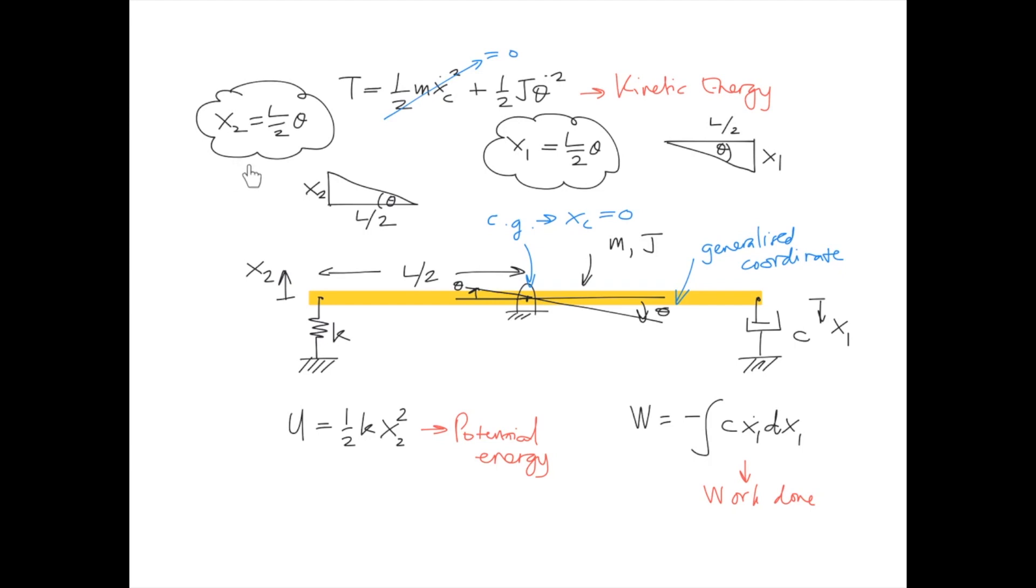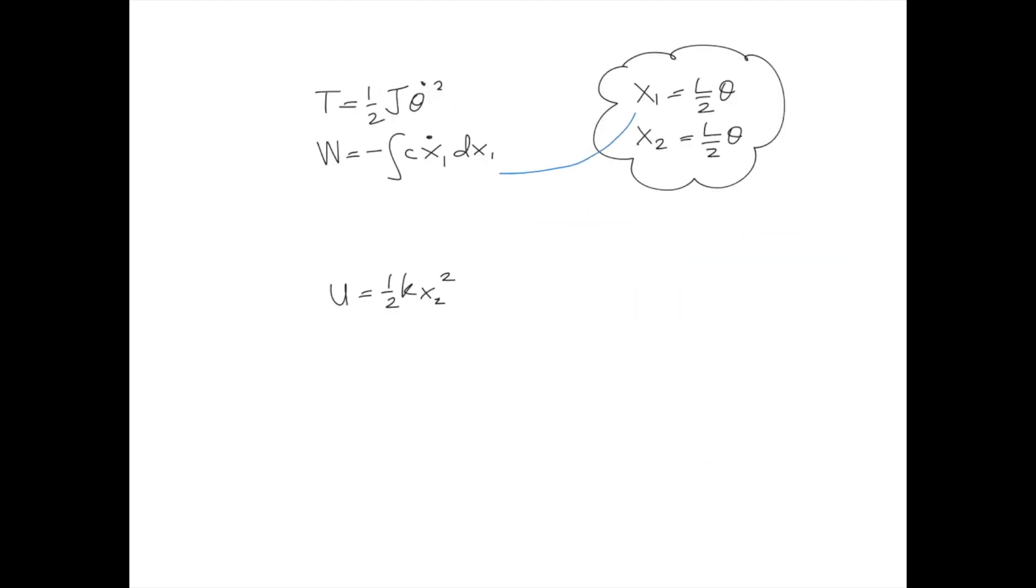Okay, so basically it is done. What's left is we have to substitute X1 and X2 in terms of theta back to the energy equations. Now the work done has been expressed in terms of coordinate theta, therefore the terms that we have here is the rotational damping constant equivalent. The same thing for the potential energy, now in terms of theta, so what we have here is the rotational stiffness constant equivalent.